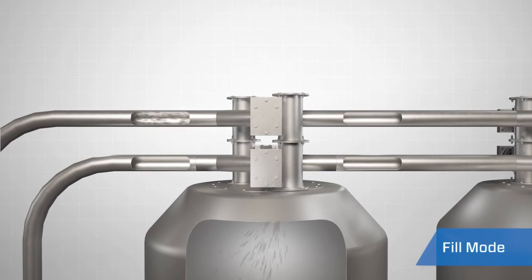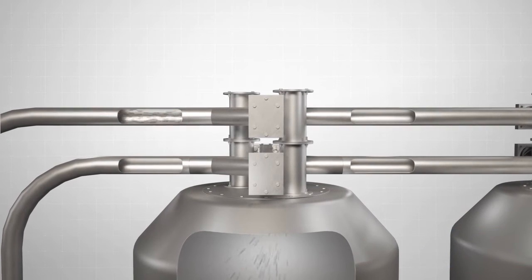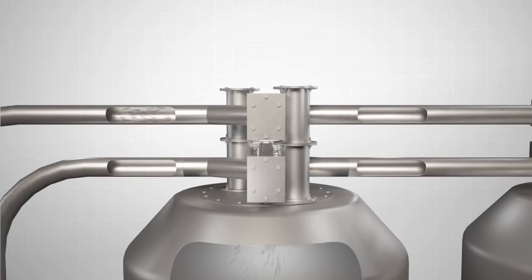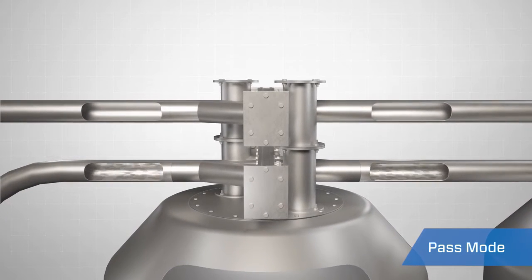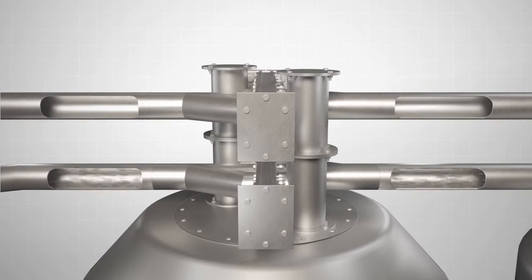In Fill Mode, materials are conveyed into the scale hopper as air pressure is exhausted downstream back to the source. In Pass Mode, air and materials are conveyed past the hopper when weight or volume is attained.